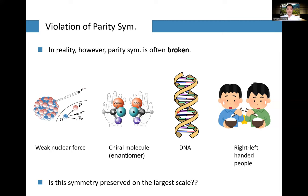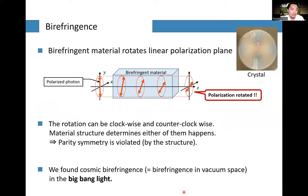Today I'd like to ask: is parity symmetry preserved on the largest scale — namely our universe? To consider that, let me introduce a phenomenon called birefringence. There exist birefringent materials such as crystals, in which a photon rotates its linear polarization plane.